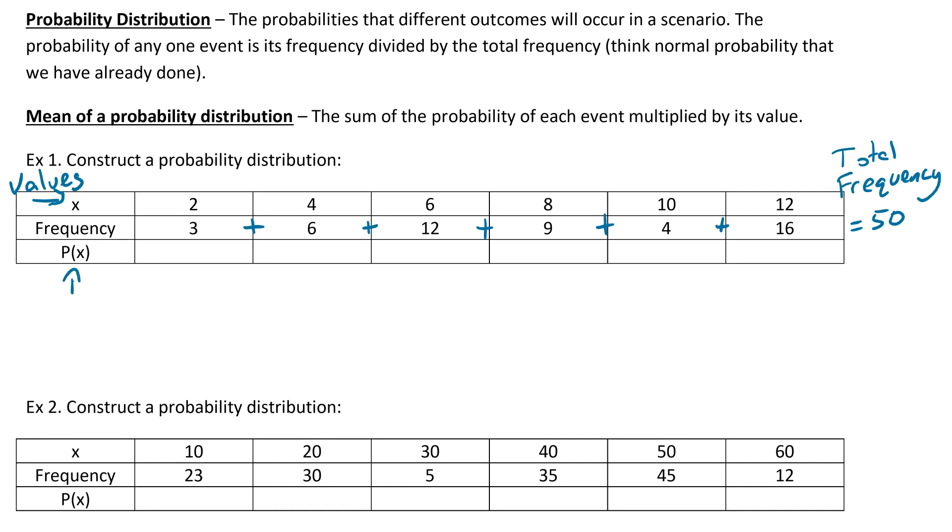Now for P(x), this is the probability that x happens. For each of these we just take the frequency, which is the number of times that that value pops up, and divide it by our total frequency which we've already found. For the first one, it would be 3 out of 50, which would be 0.06. For the second one, it would be 6 out of 50, should be 0.12.